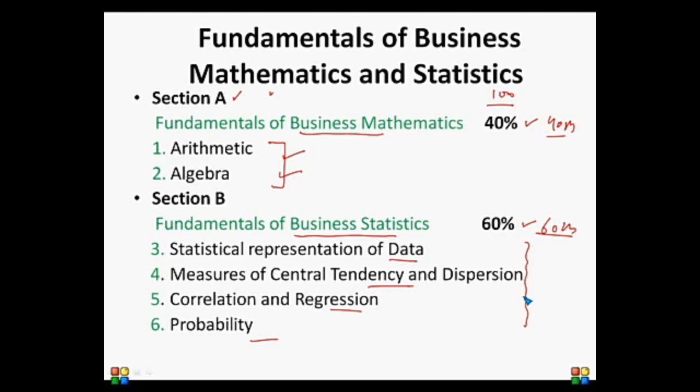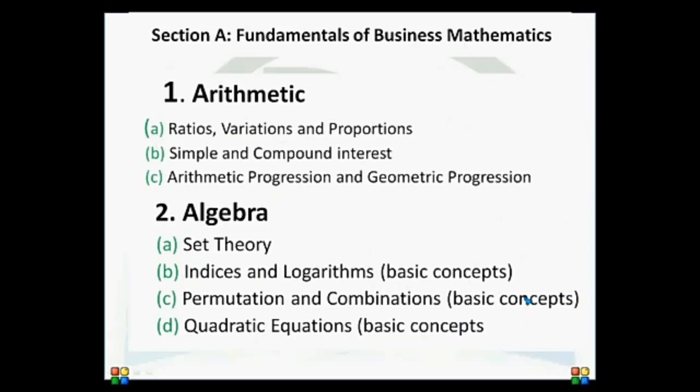Let's look at Section A. Section A has a total weightage of 40 marks, with 20% in Arithmetic and 20% in Algebra.